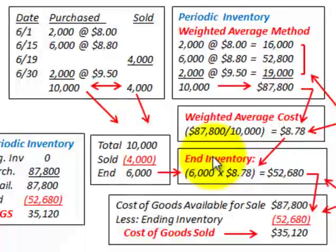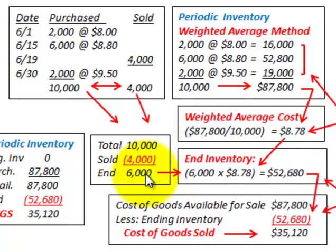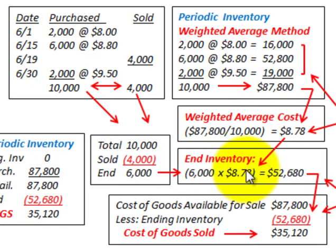To determine our ending inventory: we sold 4,000 of the 10,000 units available. So 10,000 less sales of 4,000 gives us ending inventory of 6,000 units. To find the ending inventory value, we take the 6,000 units times the weighted average cost of $8.78, giving us an ending inventory value of $52,680.